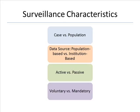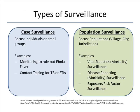Slide 16: Surveillance has four characteristics. 1. Type — Case or Population Surveillance. 2. Data Source — Population or Institution Based. 3. Collection — Active or Passive. 4. Enforcement — Voluntary or Mandatory.